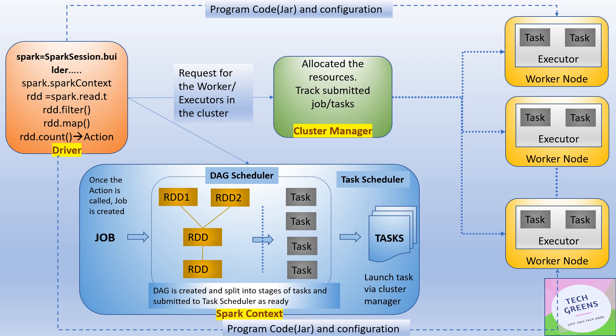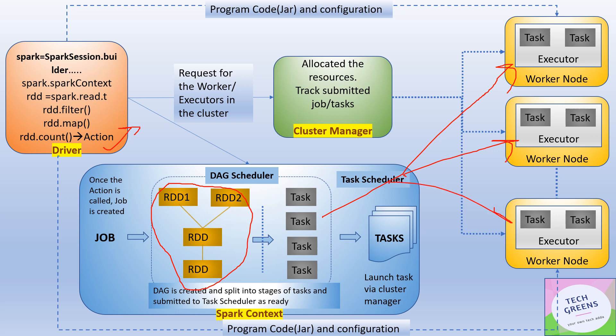This is how Spark internals work. As soon as an action is called on the underlying RDD, it is submitted to the DAG scheduler. The DAG scheduler has the DAG lineage, which is the RDD lineage. Based on that, the DAG scheduler creates tasks, which are sent to the different worker nodes for execution. These tasks are also grouped into stages based on whether the operation is a narrow transformation or a wide transformation.